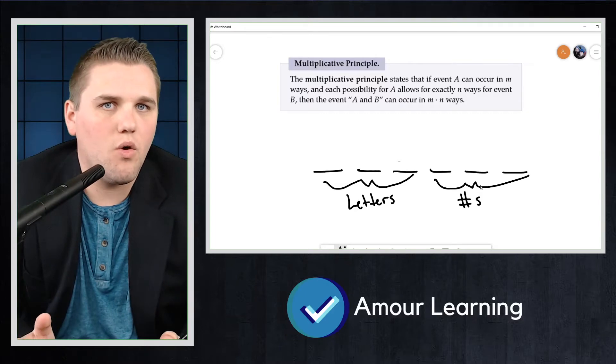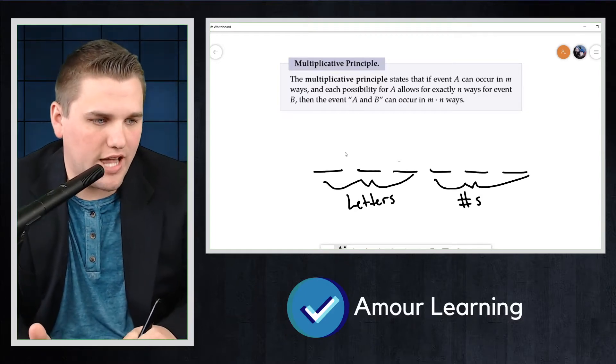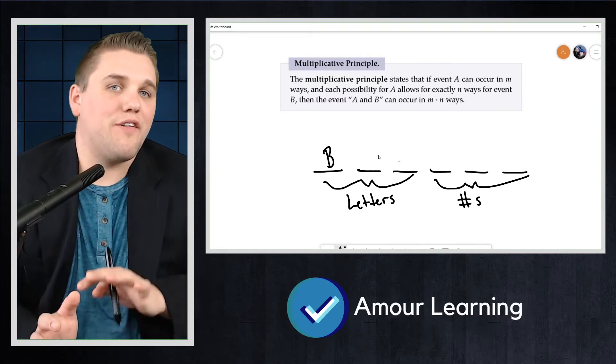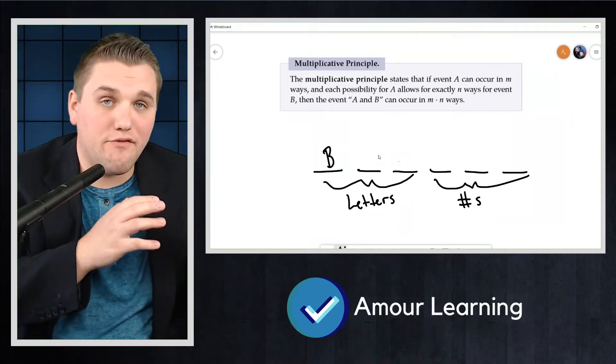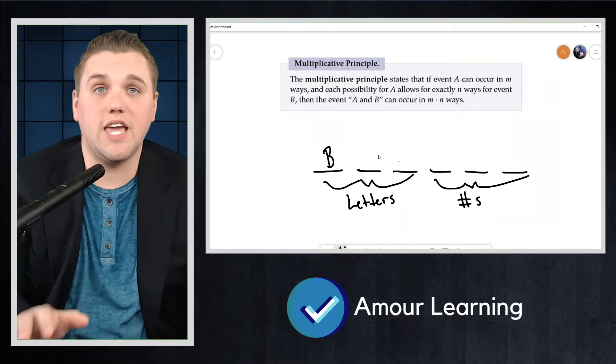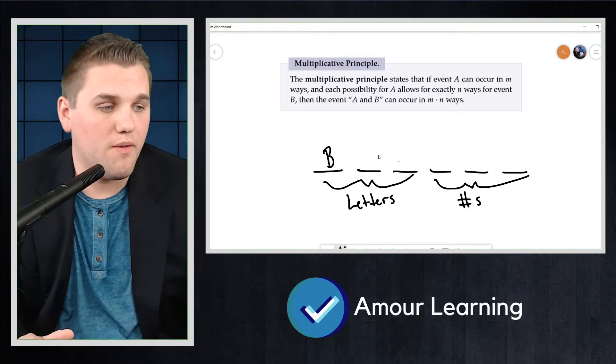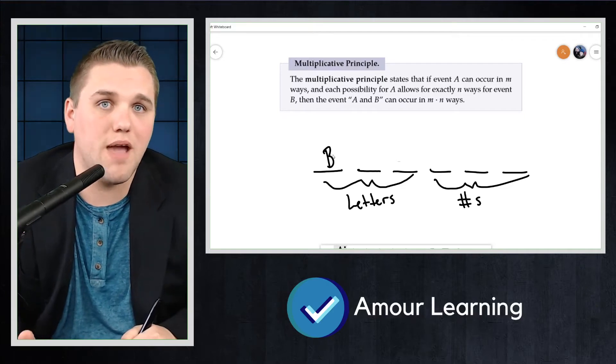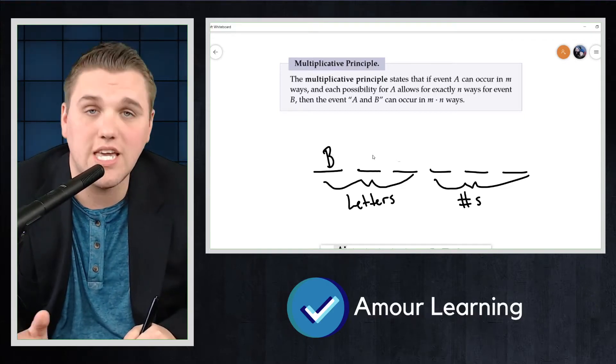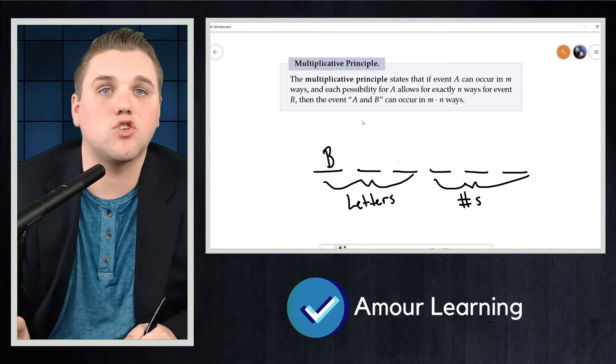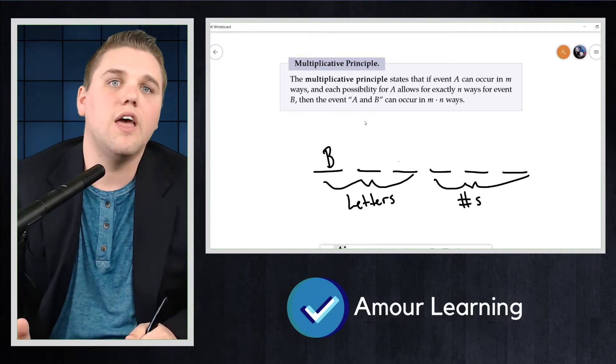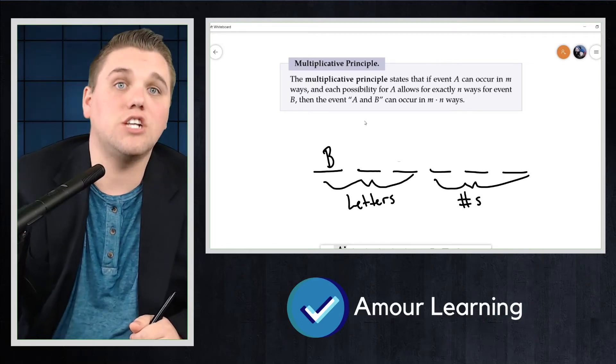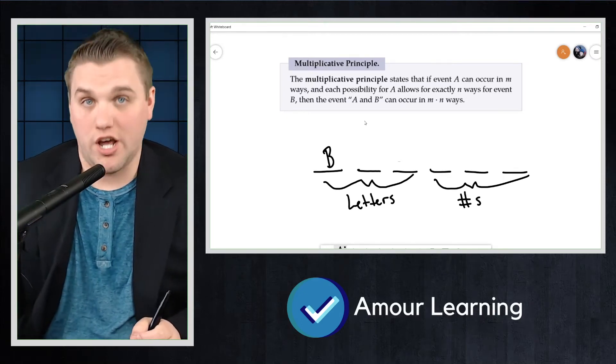Well, whatever I pick for my first letter, the next five events here are completely independent. So this next letter doesn't depend on the choice I made for the first letter. It could be a C, it could be a D, it could be any of the 26 letters, it doesn't matter. There are six events total here and each event is independent of each other.